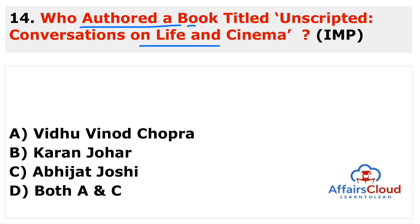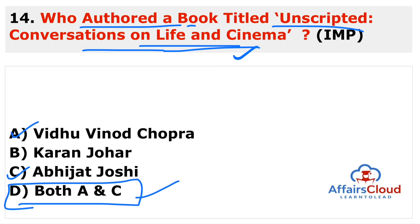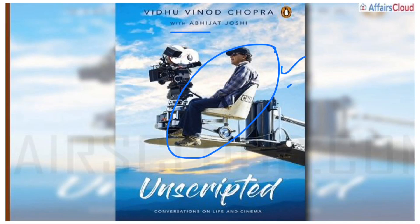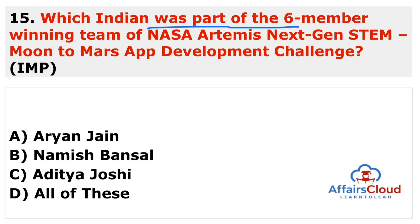Next question from the important questions section: who authored the book titled 'Unscripted: Conversations on Life and Cinema'? The book is related to cinema and Bollywood. The answer is both Vidhu Vinod Chopra and Abhijit Joshi. Vidhu Vinod Chopra is known for famous movies including the Munna Bhai series and Three Idiots (2009). Abhijit Joshi was the screenwriter for Three Idiots and Sanju.